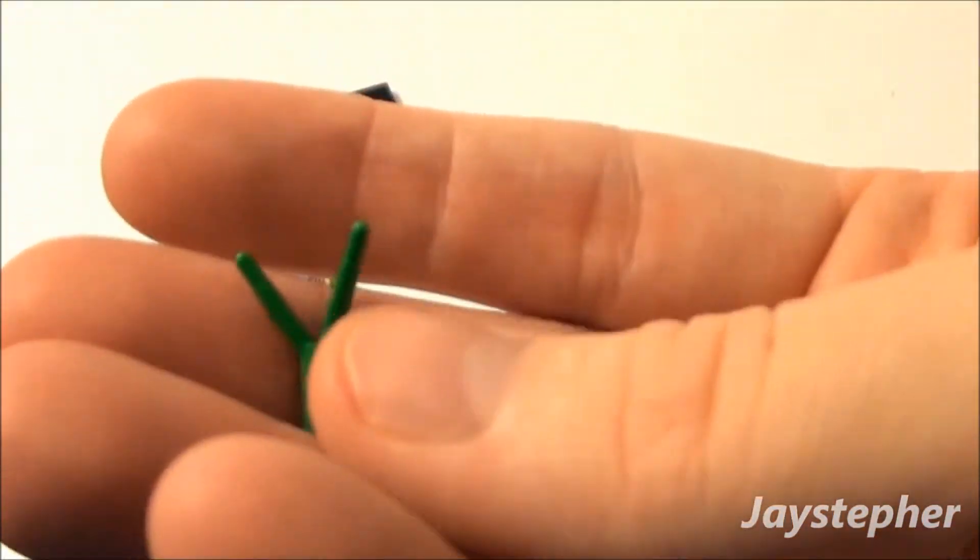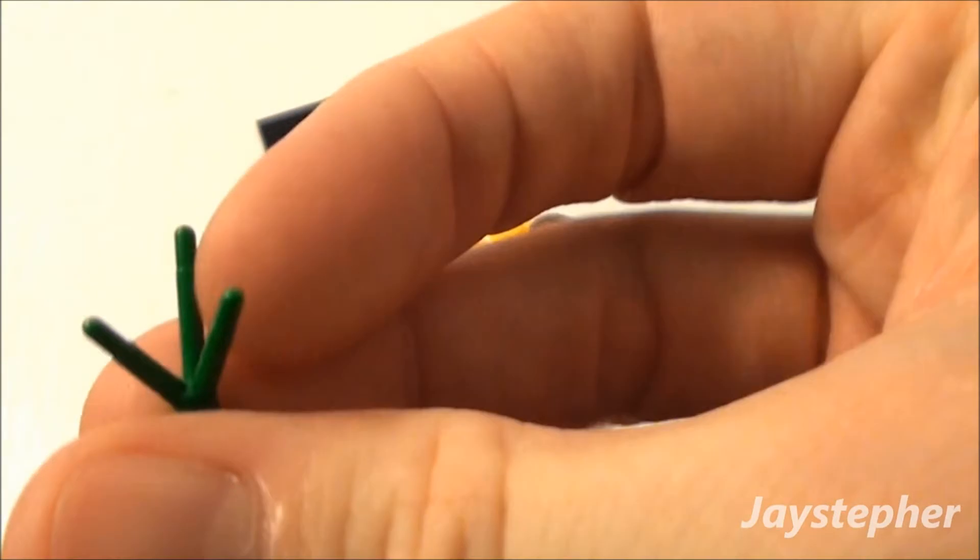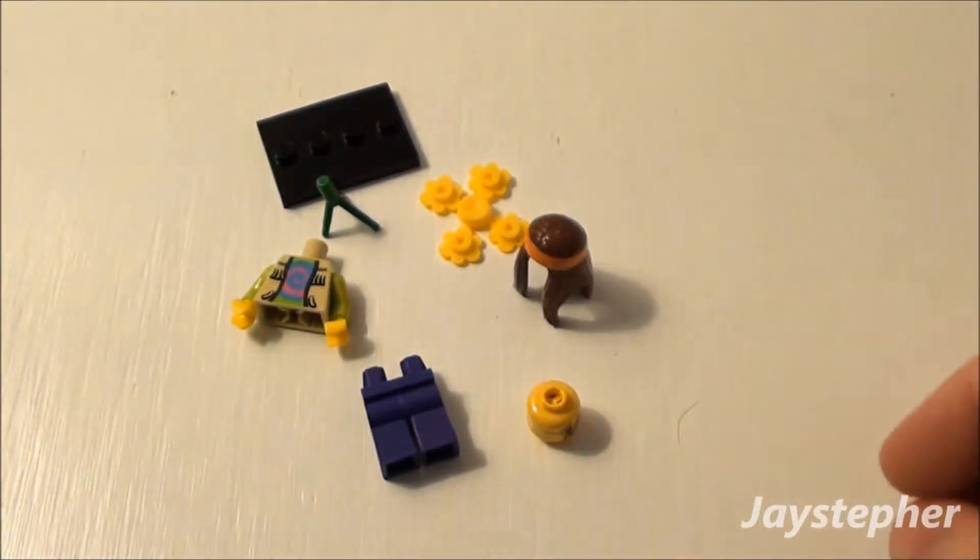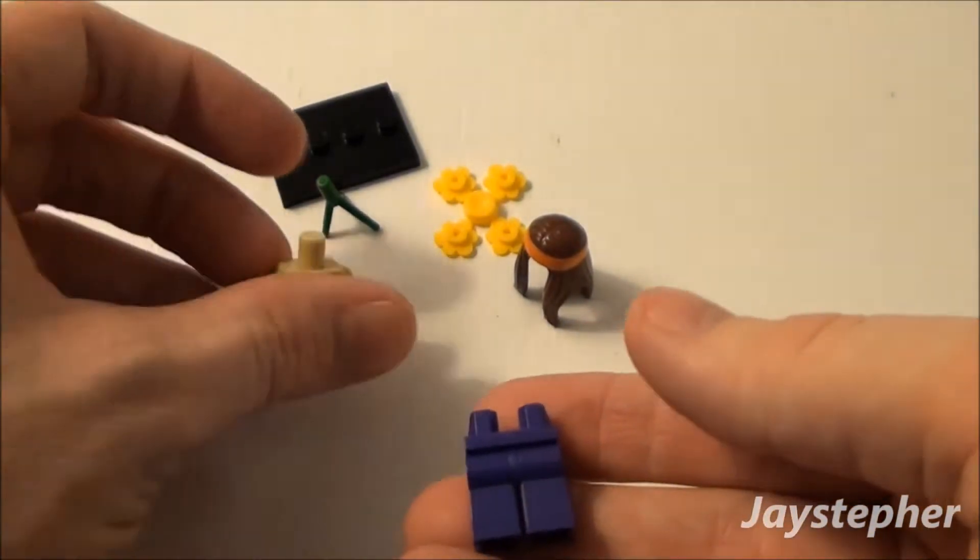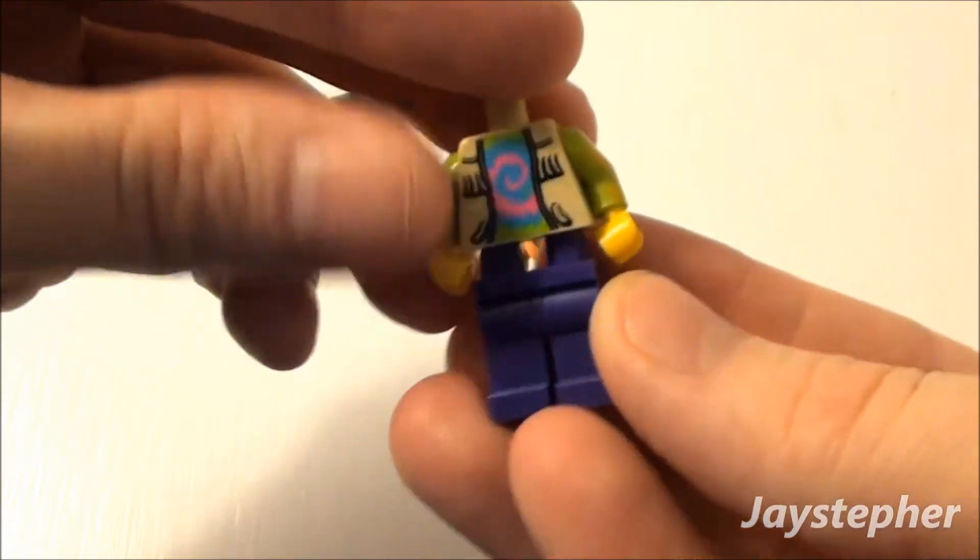Some kind of vine thing. Looks like you put flowers or something on that. Oh, there's some flowers. So I guess we're supposed to just guess on how it goes together. So let's piece it together here.